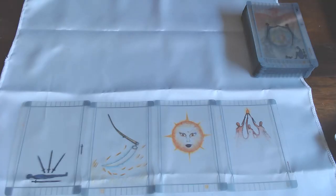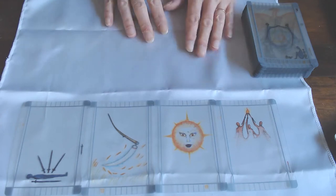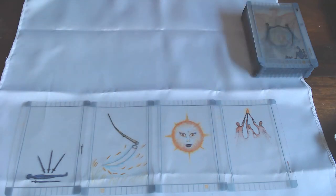Hi Aquarius, this is your reading for the 7th to the 13th of September and I'm using the Transparent Tarot. I've laid out the four cards. You're going to get 12 cards in total and you'll get the big picture at the end.